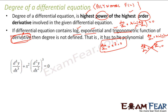Let us take some examples. First: d³y/dx³ (third order derivative) + x²(d²y/dx²)³ = 0. The maximum order is 3, so order is 3. There is no log, exponential, or trigonometric function, so degree is defined. The maximum power of the highest order term (d³y/dx³) is 1, so degree is 1.